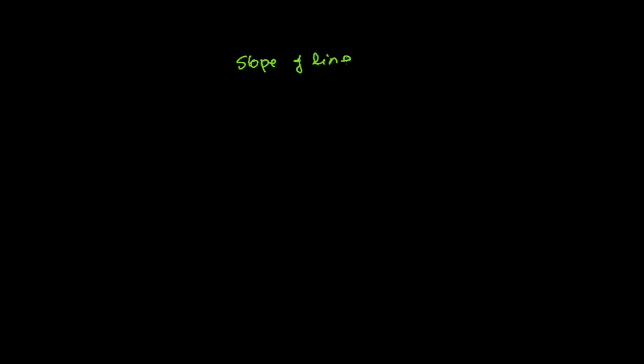We're going to start the new chapter in mathematics called the straight line. To understand the straight line, we should be very well acquainted with the slope of the line. Before learning about the straight line, you should have a very good concept of coordinate geometry. So if you haven't covered coordinate geometry yet, please first go through it to get the basic concepts, and then let's start the straight line.